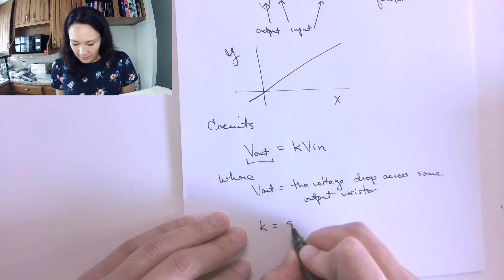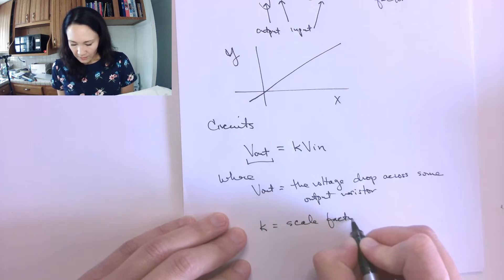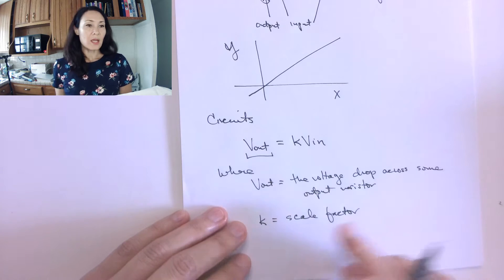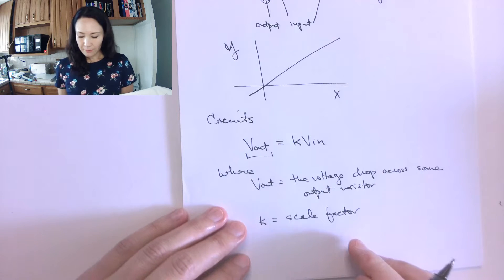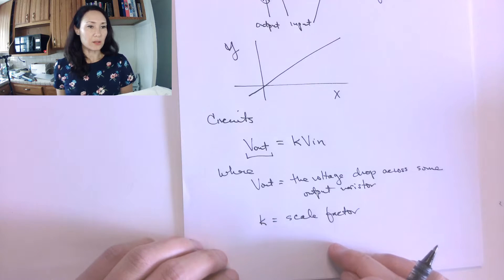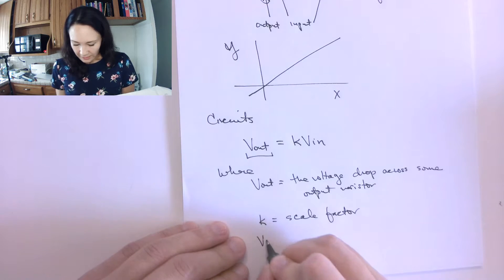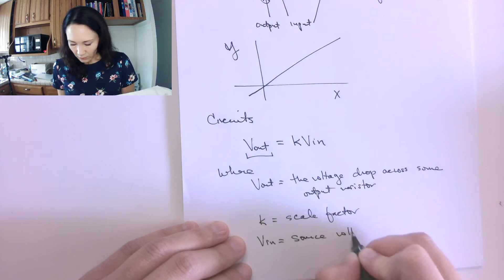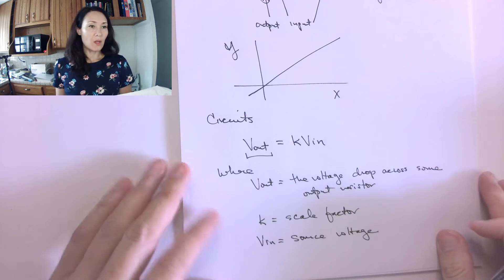k is a scale factor, and this is going to be a constant. It's determined by the way the resistors are configured in the circuit. And then lastly, this v in, this is going to be our source voltage.